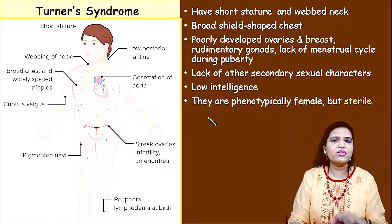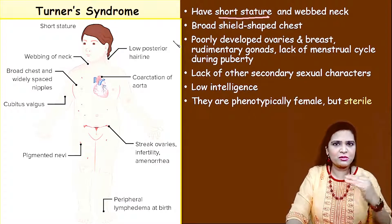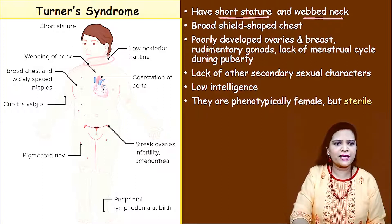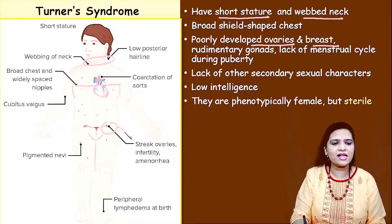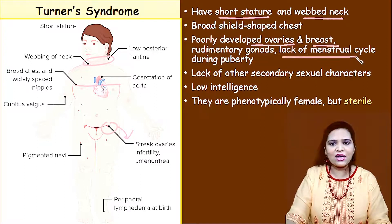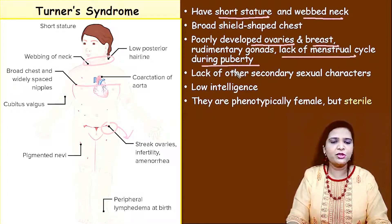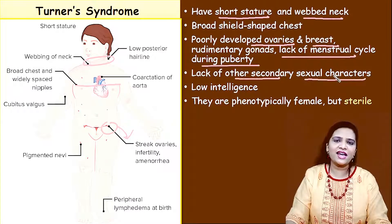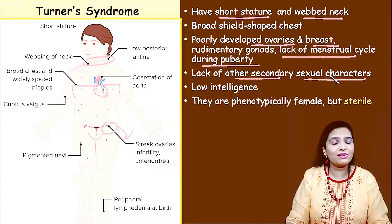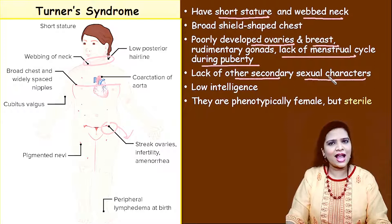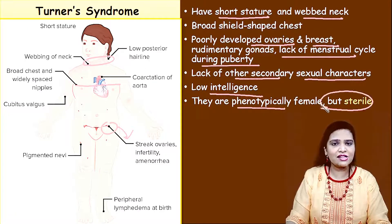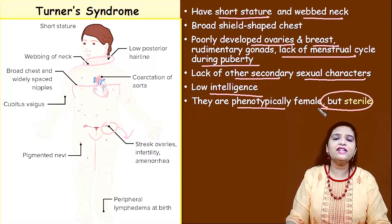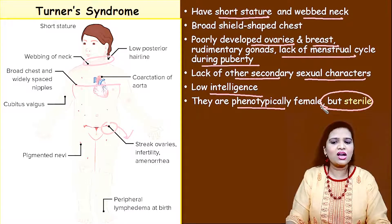What are the characteristic features of Turner syndrome women? They have short stature, webbed neck, and a broad shield-shaped chest. The ovaries and breasts are poorly developed. There is lack of menstrual cycle after puberty, and lack of other secondary sexual characters — breast development, pubic hair growth are all absent. Their intelligence will be less. They are phenotypically female but are sterile — they cannot reproduce.